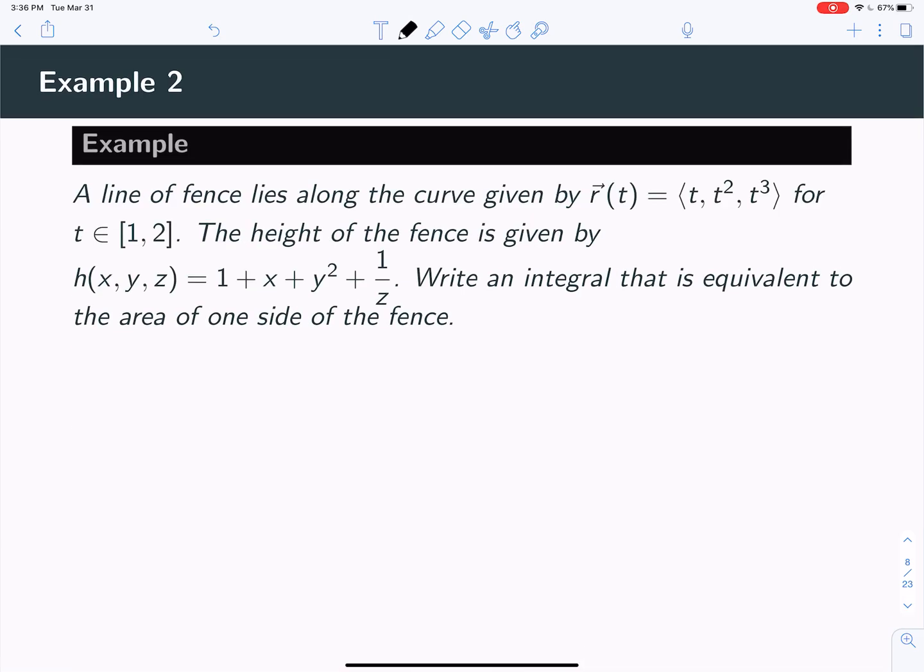Let's do one more example here. This is a three-dimensional example. So you've got yourself a line of fence that's sitting along the curve r(t) is t, t², t³. So now we're in three dimensions, and this kind of fence is shooting off in space. And then the height of the fence is different at different points.